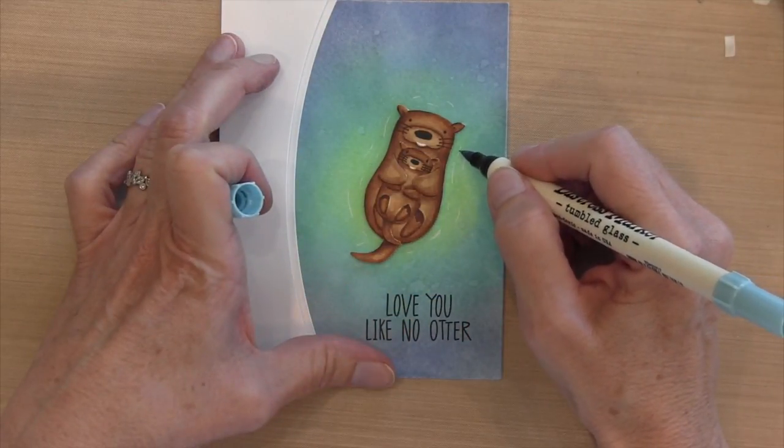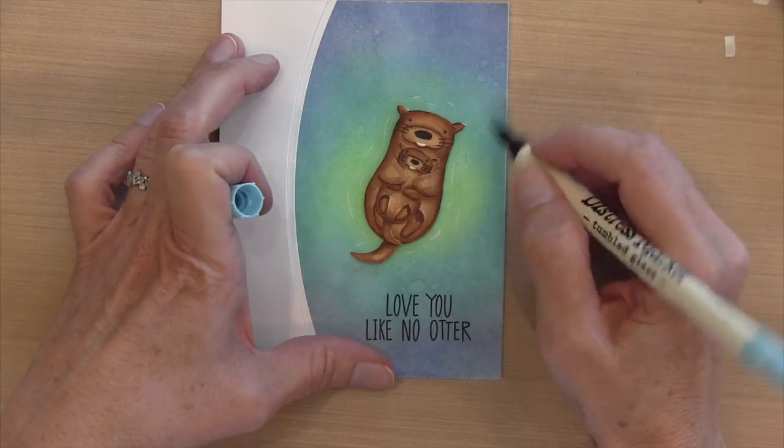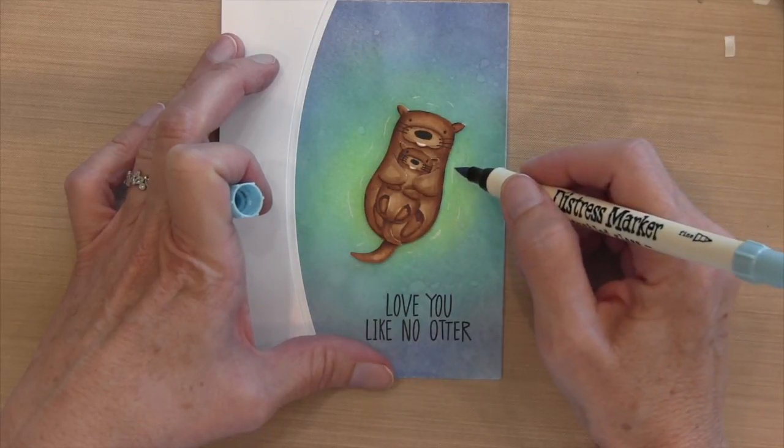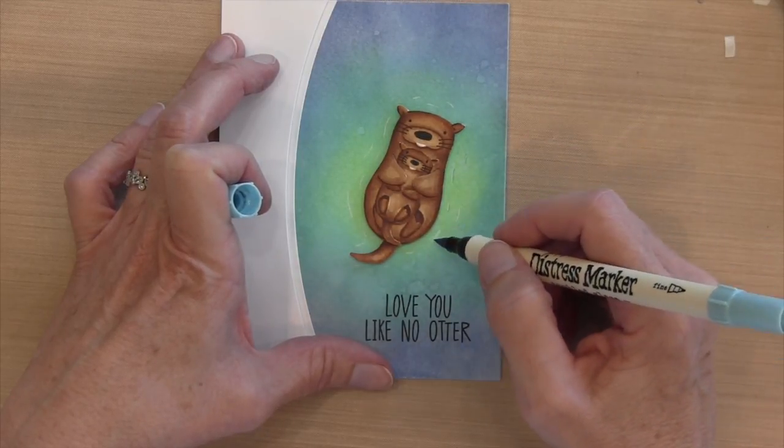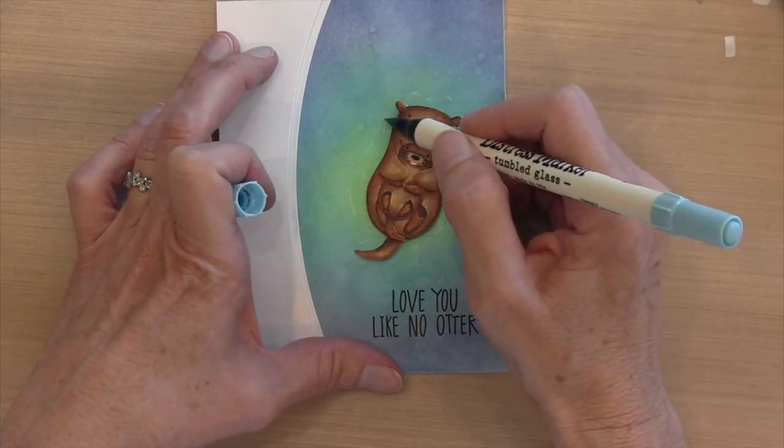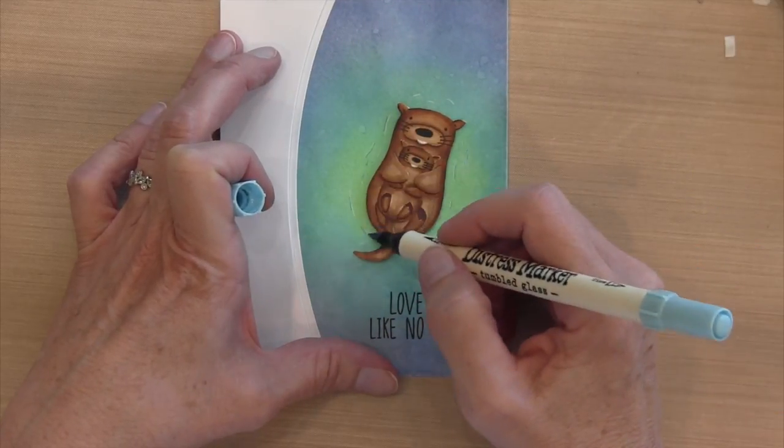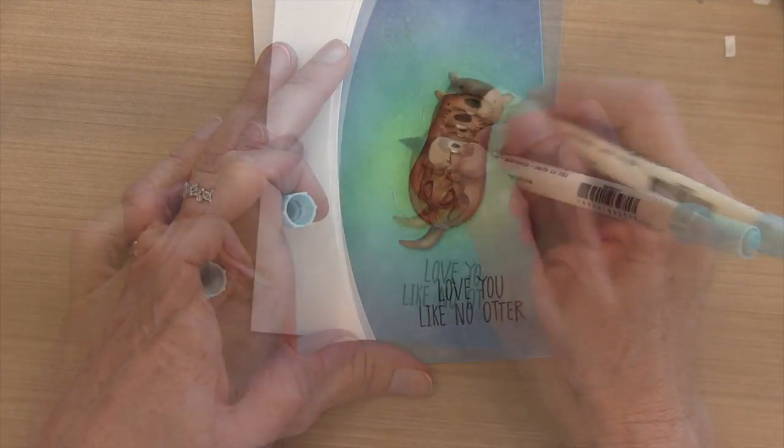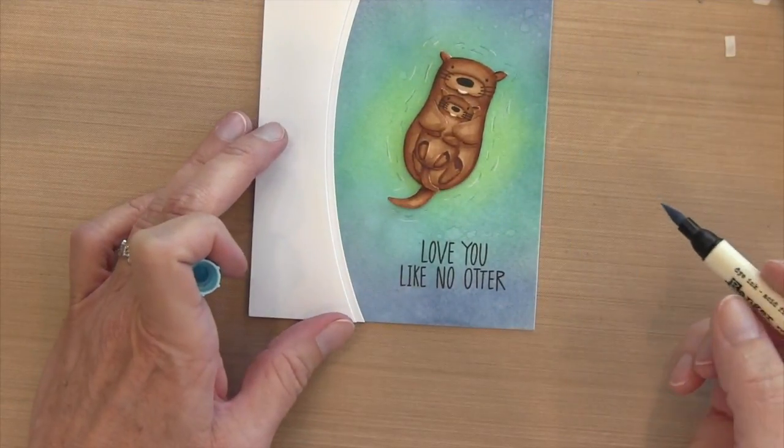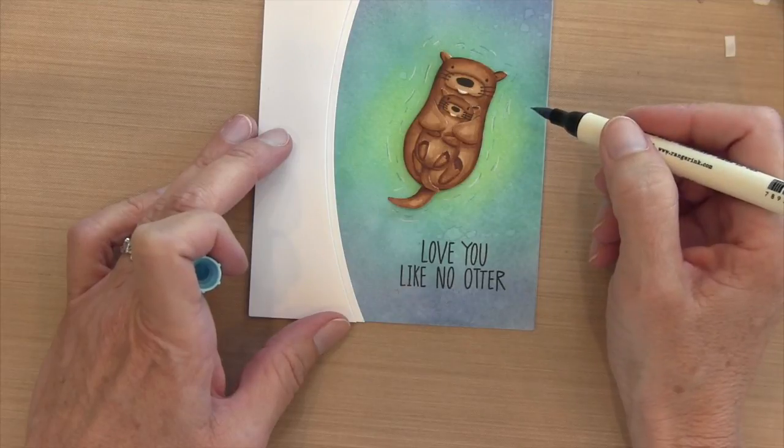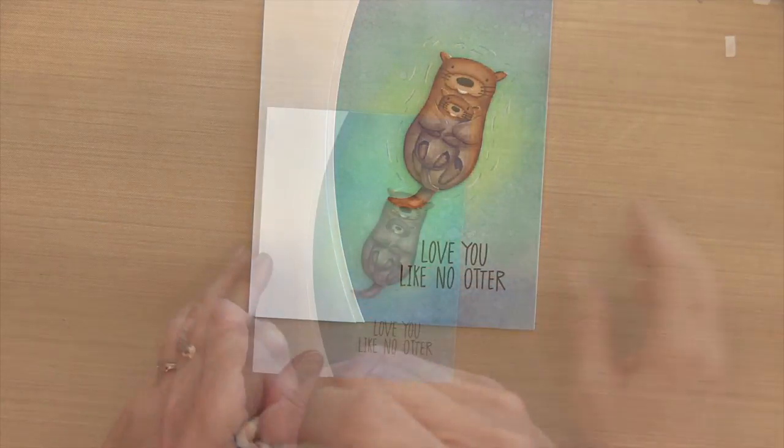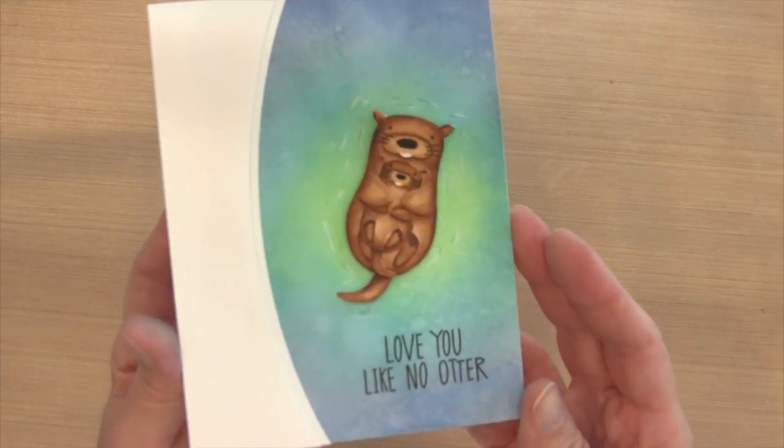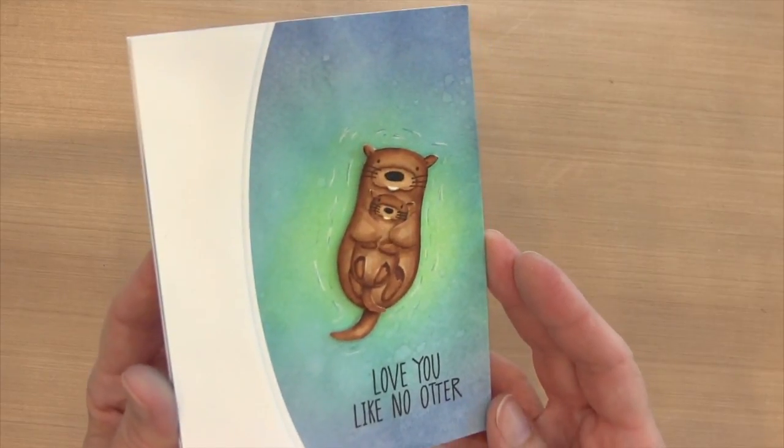So I took my tumbled glass marker, and I'm using the brush tip side because my fine tip doesn't work very well. I'm coloring over some of the chalk and then next to some of the chalk, creating some new lines with the tumbled glass. I'm rubbing it a little bit with my finger, but that's not really doing anything. I just went back and forth between the two markers until I got something that looked at least a little bit like some water ripples.